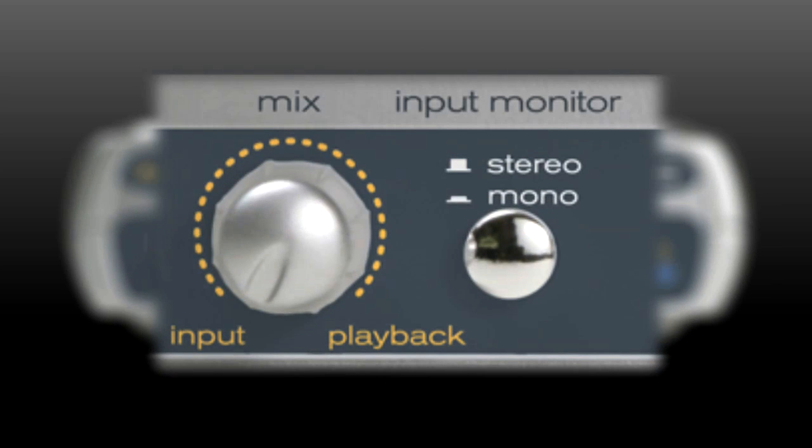The FastTrack USB allows you to directly monitor your inputs with no latency or delay. Push the silver stereo mono button in to select mono. This will allow you to monitor either input on both sides of your headphones or speakers.